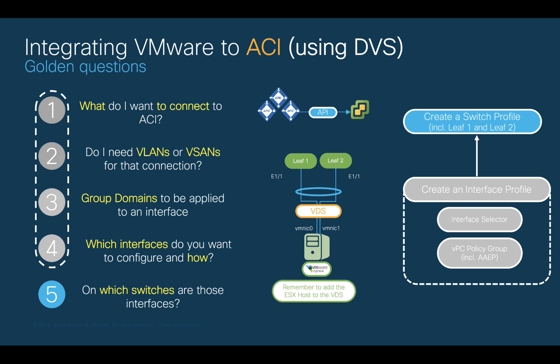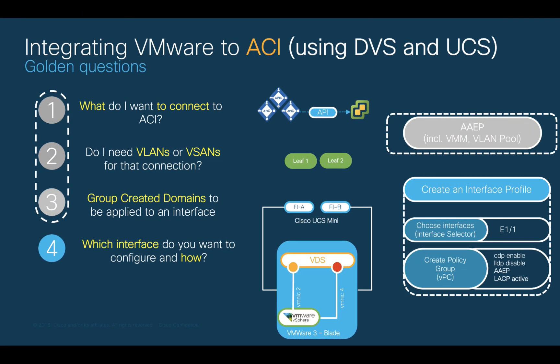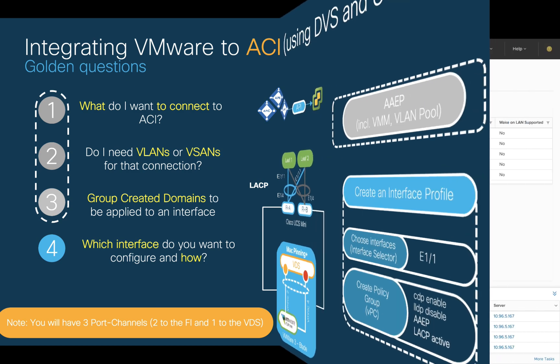As a side note, remember that we must add the ESX host to the newly created VDS in vCenter. That should do it if you have ESX rack servers. In my case, I have Cisco UCS with Fabric Interconnects, so let's perform these final two steps in my environment. I will connect Fabric Interconnect A to Interface 1/11 on each leaf using VPC and LACP. Remember, we have already configured the VDS by creating a VMM domain, and each host we attach to it will use MAC pinning on its VM NICs based on that configuration. So in the end, you will have three port channels.